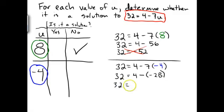Now, 4 minus a negative number is the same as addition, so this becomes 4 plus 28. And finally, 4 plus 28 is indeed equal to 32. So this time we have a true equation when we substitute it in the value, and so the answer is going to be a yes for the value of negative 4.